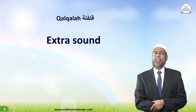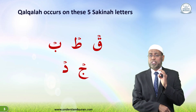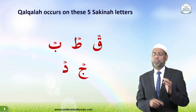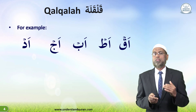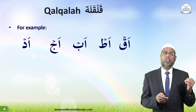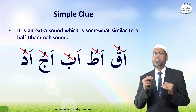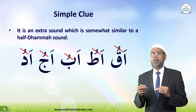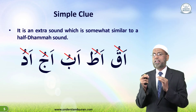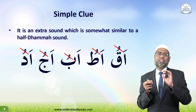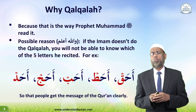Qalqala means extra sound. Qalqala occurs on these five sakina letters. For example: Aq, Ab, Aj, Ad. It is somewhat similar to a half dhamma sound. So instead of saying Aq, you say Aq; instead of saying Atu, you say Atu. This applies to Ab, Aj, Ad, and so on.